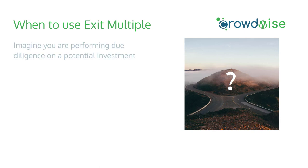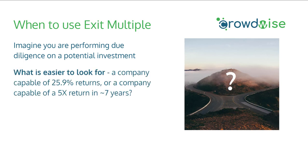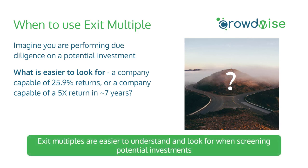Now, when do you use the exit multiple? Let's imagine you're performing due diligence on a potential investment. What's easier to look for — a company capable of 25.9% returns, or a company capable of a 5x return in seven years? Exit multiples are easier to understand and look for when screening potential investments. You can much more easily estimate based on time frame — say seven years to hit key milestones — and then potential acquisition targets or exit opportunities of a 5x multiple based on similar exits in the industry. IRR is much harder to use as a raw screening number.